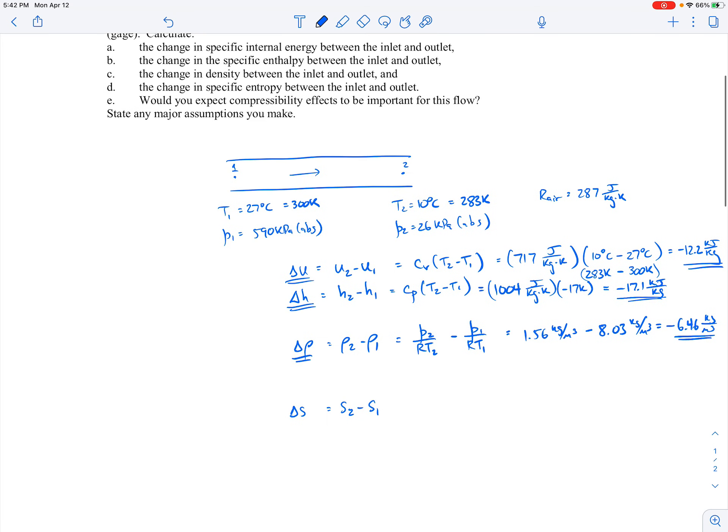Now the last one is the change in specific entropy. Again, since we're dealing with small temperature changes, we can assume that we're dealing with a perfect gas. And the change in entropy, you can just go back to your thermodynamics notes for this derivation. It looks like the following.